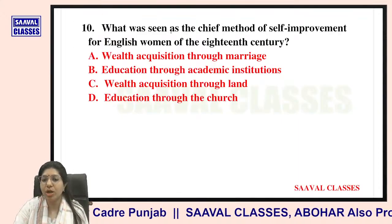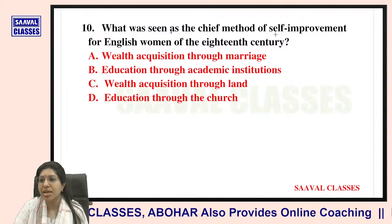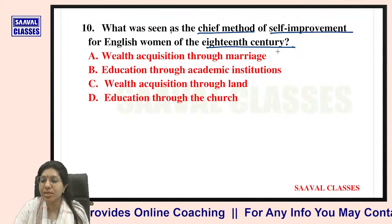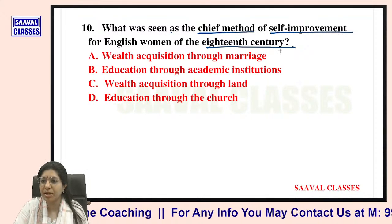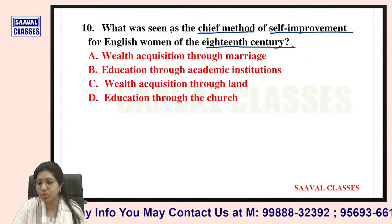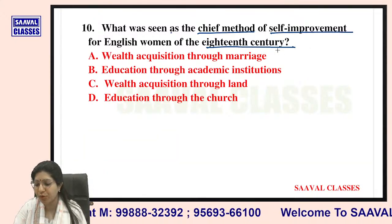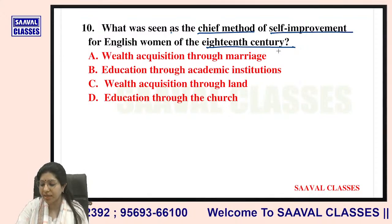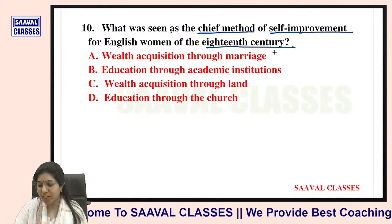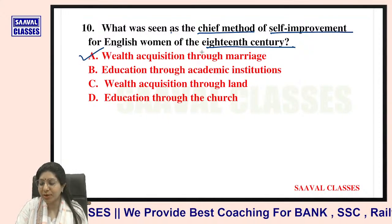Question number ten: What was seen as the chief method of self-improvement for English women of the 18th century? Options are wealth acquisition through marriage, education through academic institutions, wealth acquisition through land, or education through the church. The answer is wealth acquisition through marriage.